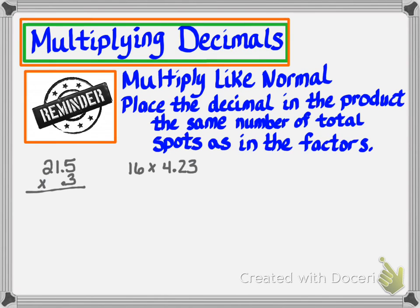Our next thing is multiplying decimals. Remember, when you're multiplying decimals, you want to multiply like normal, pretending that the decimal is not there just for a few moments. Once you multiply, you're going to place the decimal point in the product the same number of total spots as in the factors. Go ahead and pause your video now and complete these two problems.